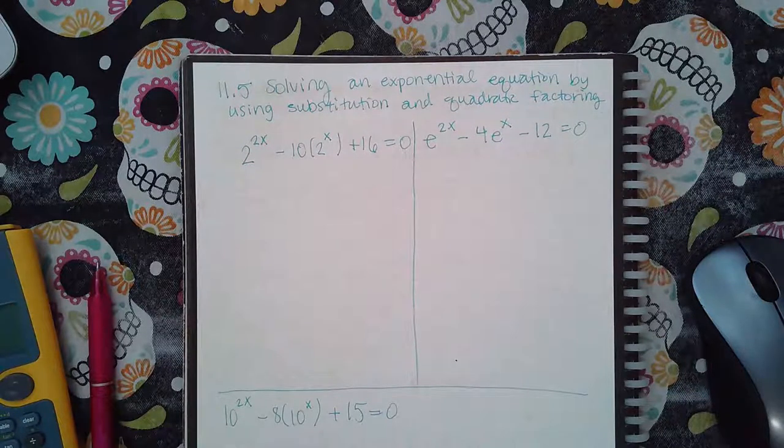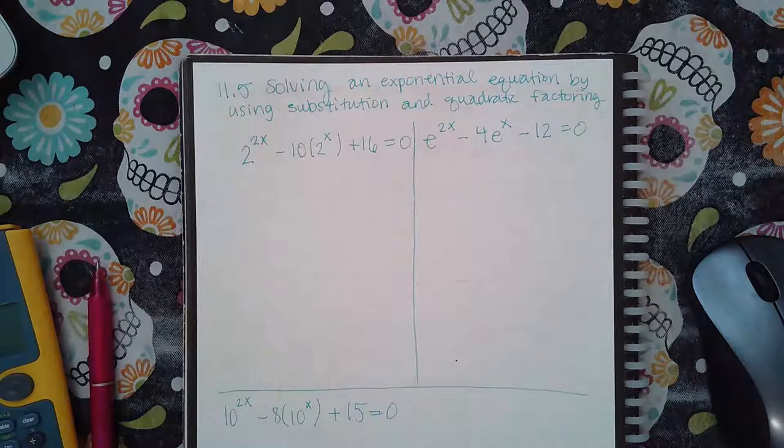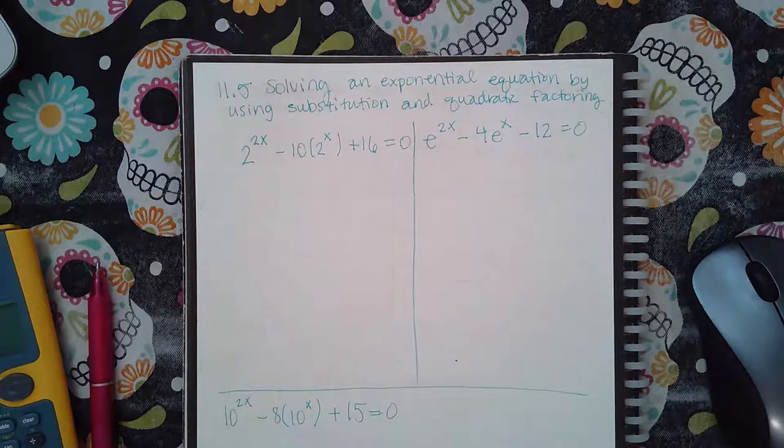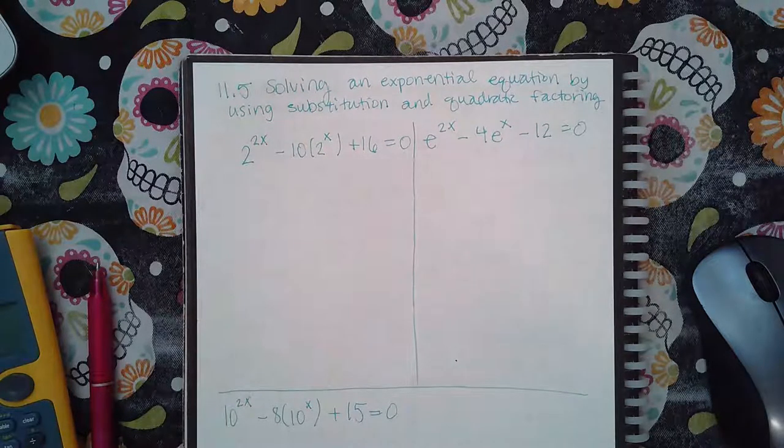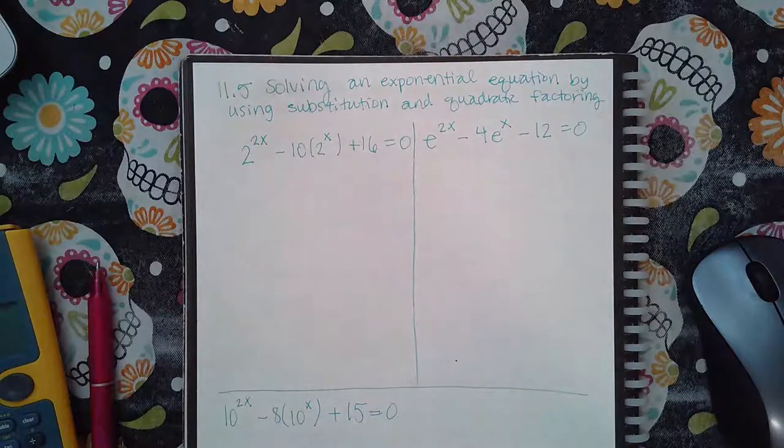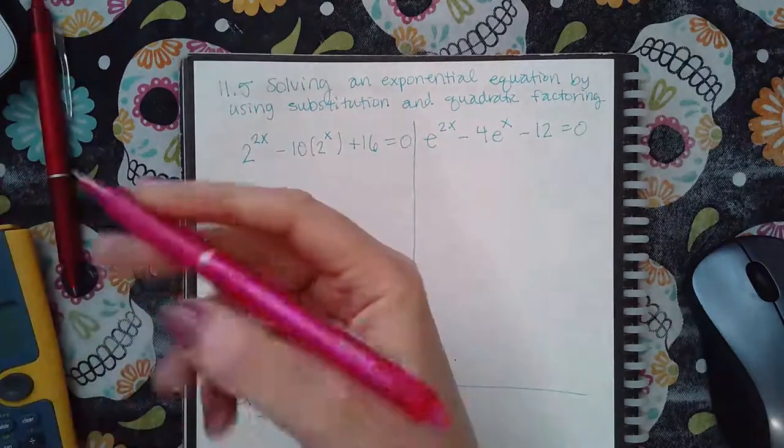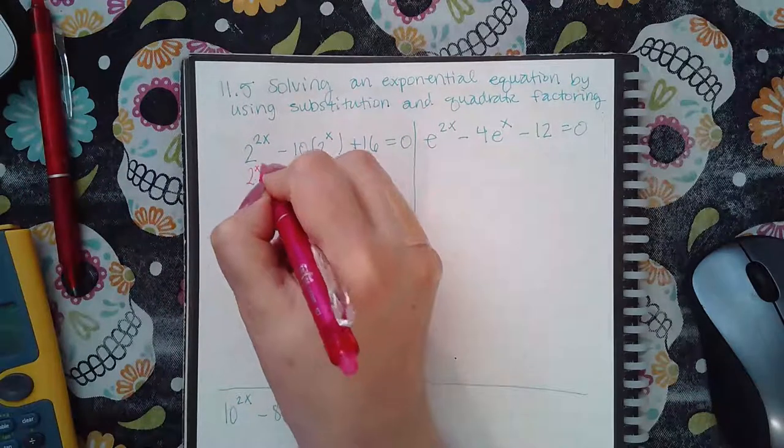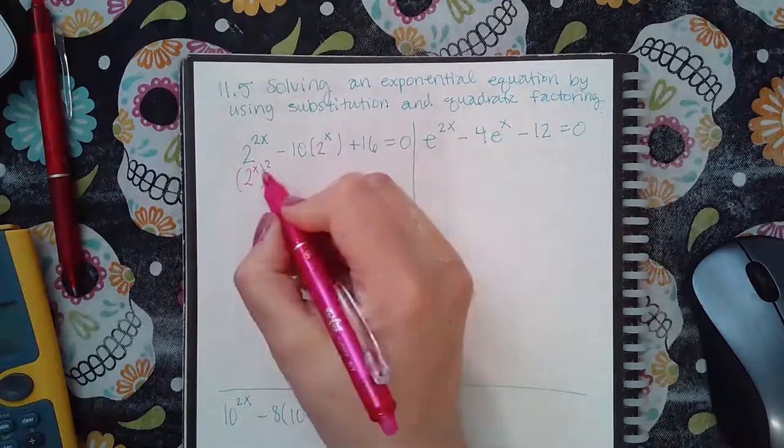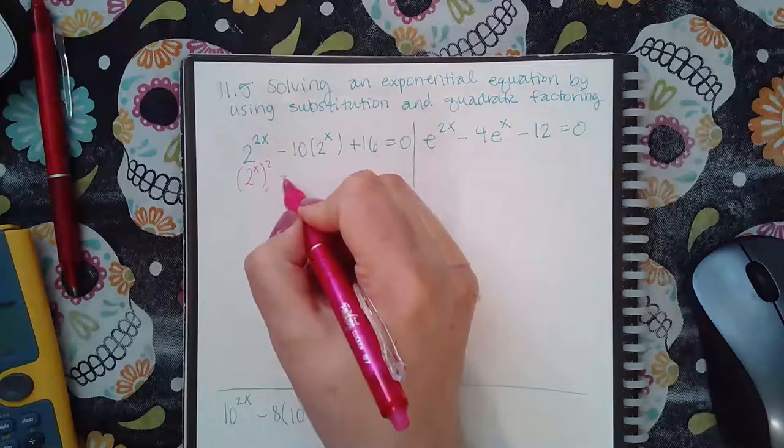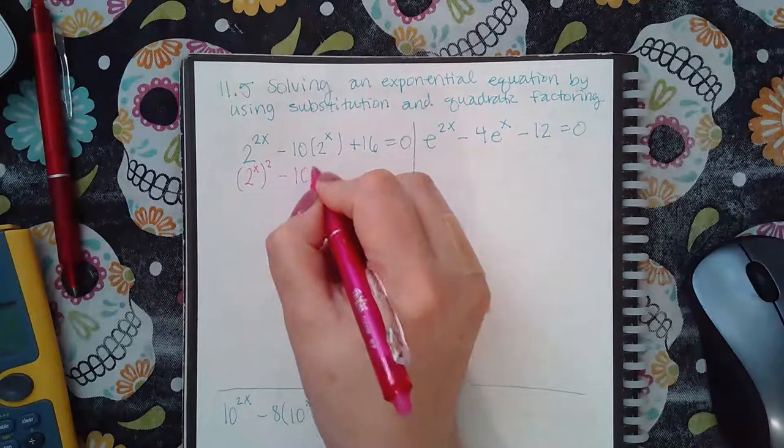Here we have solving an exponential equation by using substitution and quadratic factoring. So in order for us to solve this, it is best to write this term as 2 to the power x squared, because remember you multiply the exponent, so it is equivalent to the exponent 2x.